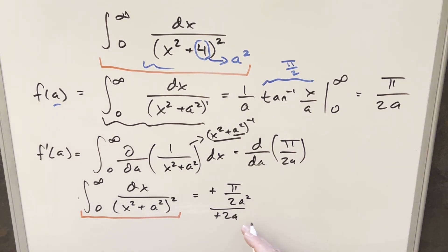Minus times minus is going to be a plus. Dividing into 2a, this is going to all simplify down to pi over 4a cubed. And so this is going to be our general solution for this integral.